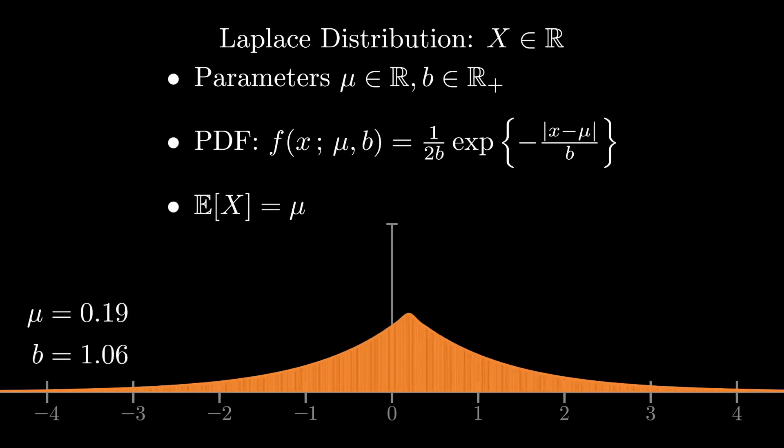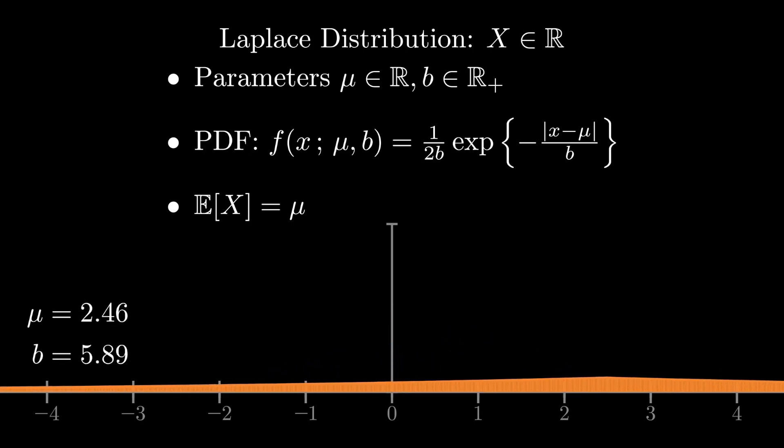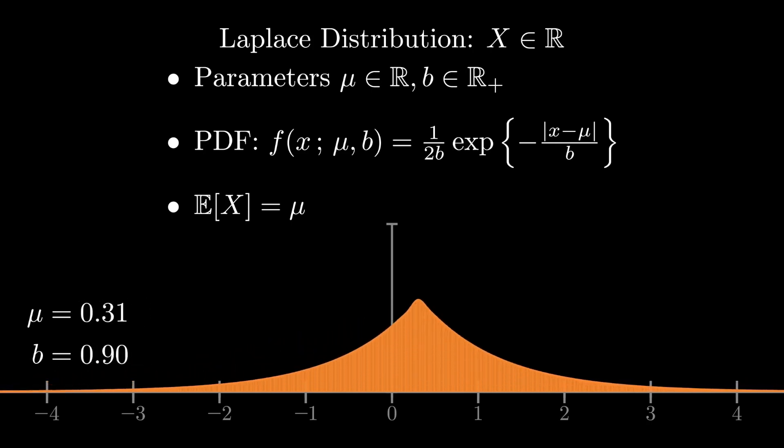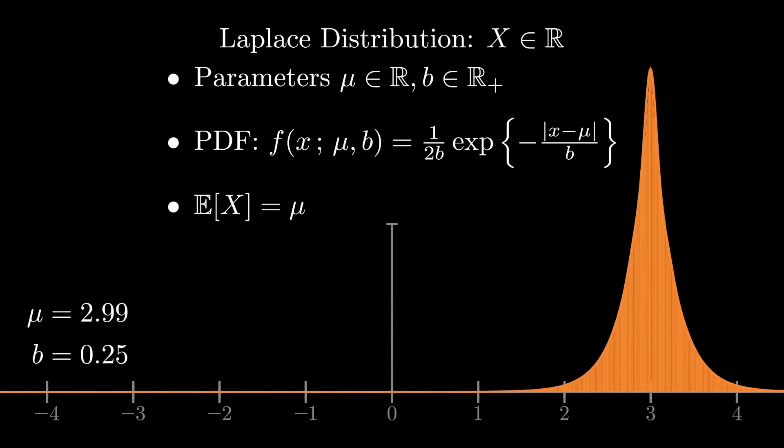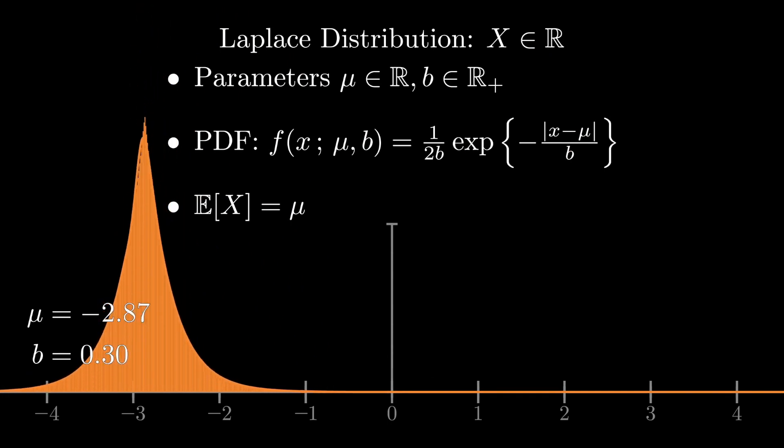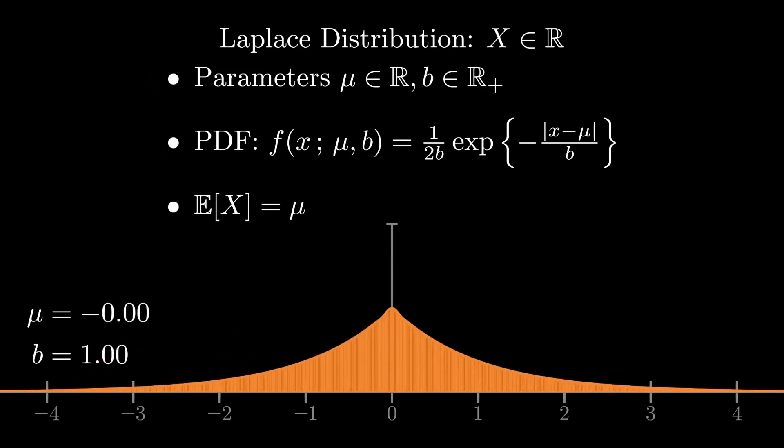One common such distribution is the Laplace distribution. Laplace random variables take their values in the reals, and the distribution has two parameters, a mean and a scale, which I'm writing here as b. The Gaussian density drops off rapidly with the square of your distance from the mean, whereas the Laplace distribution only drops off with the absolute value of the distance from the mean.